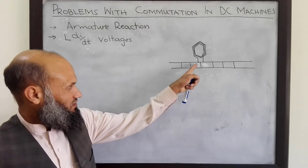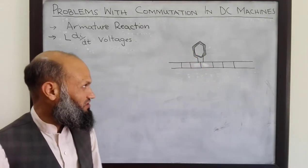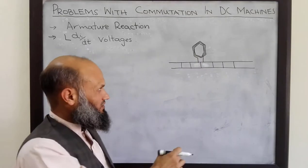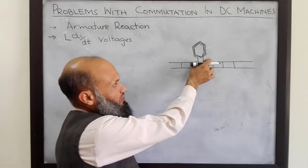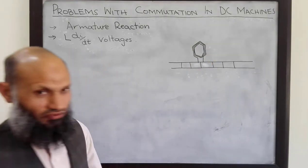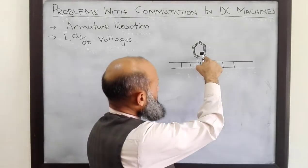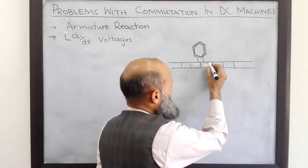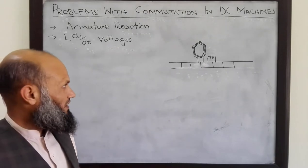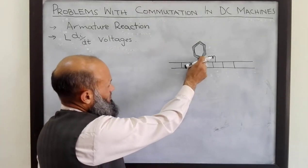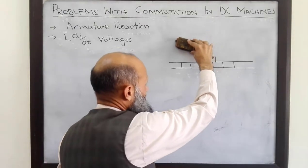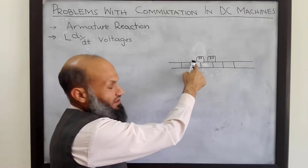In lap wound DC machines, two sides of the coil are connected to adjacent commutator segments. In real machines, we do not have a single turn of wire; rather we have a coil with multiple turns and two ends of the coil coming out are connected to adjacent commutator segments. This coil is slightly difficult to draw, so let's draw it by another symbol — a coil with multiple turns and two sides connected to adjacent commutator segments. One coil with two ends connected to adjacent commutator segments.